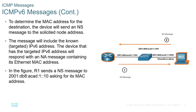To determine the MAC address for the destination, the device sends a Neighbor Solicitation message to the solicited-node address, including the known targeted IPv6 address. The device with that IPv6 address responds with a Neighbor Advertisement message containing its Ethernet MAC address. This works the same way ARP works in IPv4, but everything uses unicast or multicast addresses — no broadcasts involved.